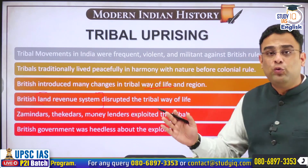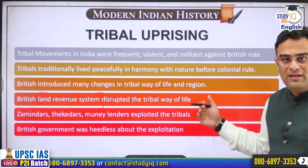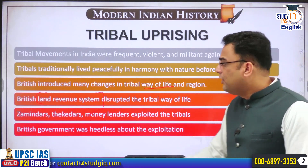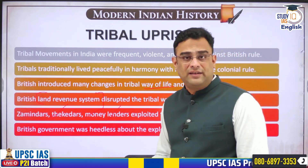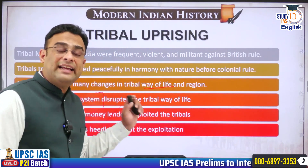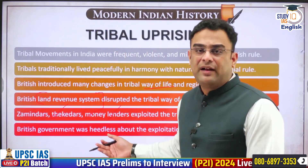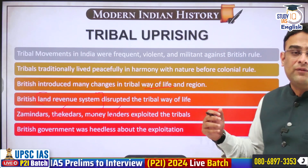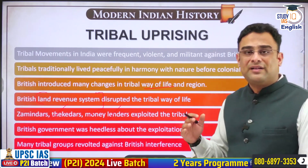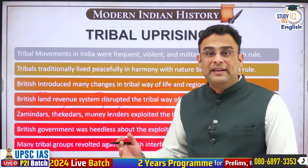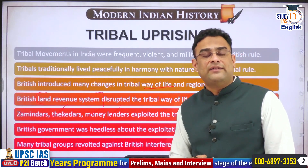The tribals understood that the changes being brought about were due to the British government — it was the British government's changes that introduced the Zamindars, Thakedars and moneylenders into the rural areas. Therefore, they tried to appeal to the British government to look into their grievances. But the British government saw these people — the Zamindars, Thakedars and moneylenders — as agents of the colonial state facilitating increasing exploitation. Left with no alternative, many tribal groups stood up and rose against the Britishers. Despite unequal odds, they bravely fought and left behind a legacy of resistance against colonial rule.